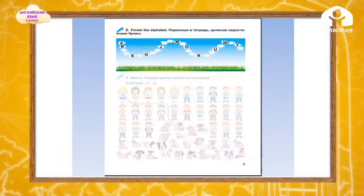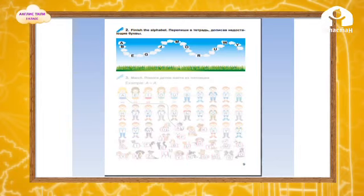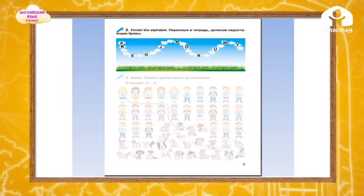Now, let's write exercise number 2, page 9. Finish the alphabet, add missing letters: A, B, C, D, E, F, G, H, I, J, K, L, M, N, O, P, Q, R, S, T, U, V, W, X, Y, Z.